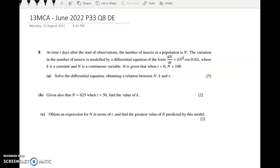We've got a number of insects in a population is N, and the variation in the number of insects is modeled by this DE. So we're given the DE, we don't have to form it, and K is a constant. N is a continuous variable, which is interesting because N is the number of insects. So actually in the end I've rounded that to the nearest integer, and we're told that when T is 0, N equals 100. We have to solve the DE and get a relation between N, K, and T.